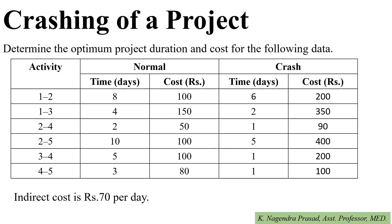In this lecture we will discuss the example problem on crashing of a project. Here given the normal time, normal cost, crash time, and crash cost for the various activities. We have to determine the optimum project duration. The indirect cost is given as 70 rupees per day.